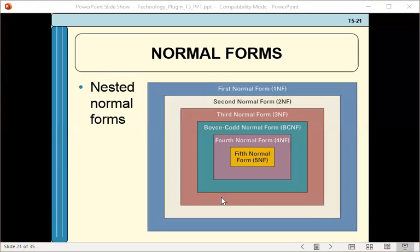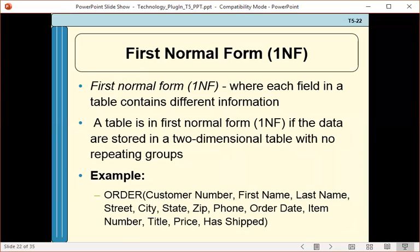In the first normal form, we have our data in a tabular format, we don't have any multi-valued attributes like phone, and we have a primary key. This is first normal form — every attribute is determined by the key. We've achieved first normal form by putting in a primary key.